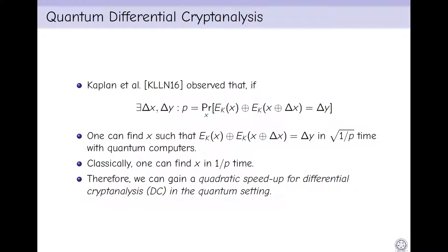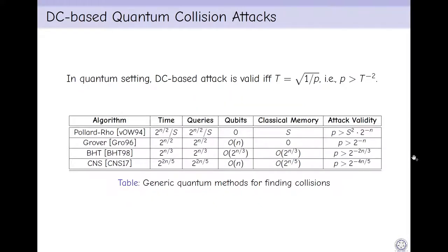Therefore, we can have a quadratic speedup for differential cryptanalysis in the quantum setting. In the quantum setting, differential cryptanalysis-based attack is valid if and only if T = √(1/p). In case of generic methods, for example BHT, the time and query complexity is 2^(N/3), but the number of qubits required is very large, 2^(N/3). In this setting, attack is valid if p is greater than 2^(-2N/3).